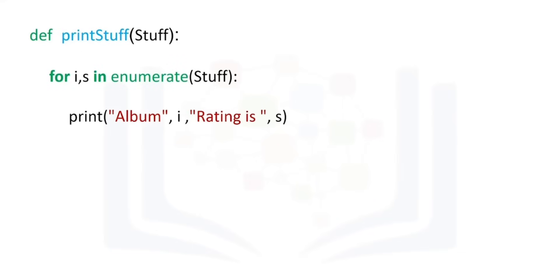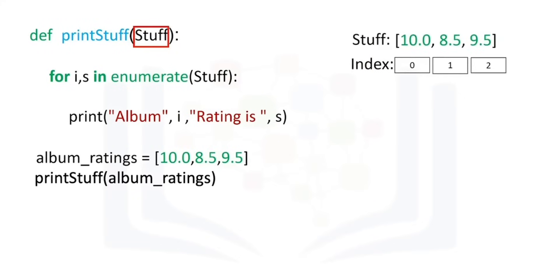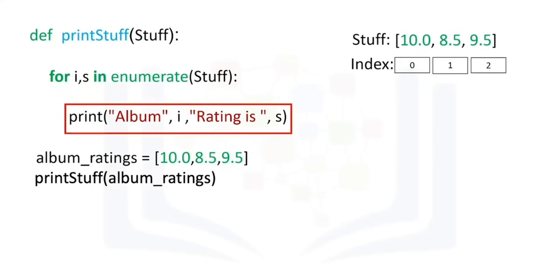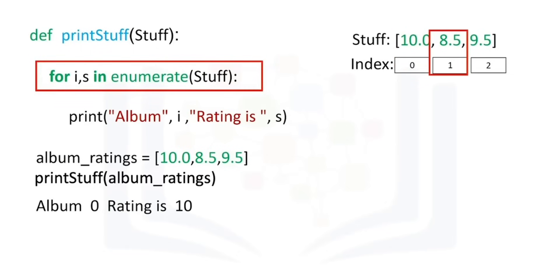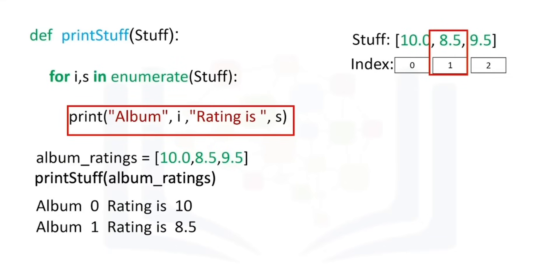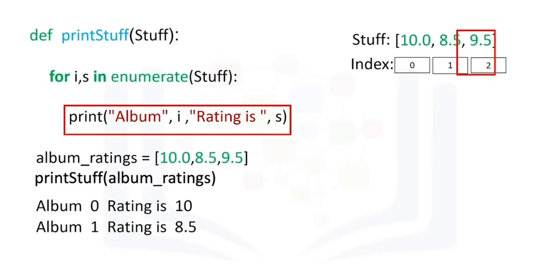We can use loops in functions. This function prints out the values and indexes of a list or tuple. We call the function with the list album ratings as an input. Stuff is used as an input to the function enumerate. This operation will pass the index to i and the value in the list to s. The function begins to iterate through the loop, printing the first index and first value in the list. We continue iterating — the values of i and s are updated, and the next values of the list and index are printed. The process is repeated until the final values in the list are printed out.